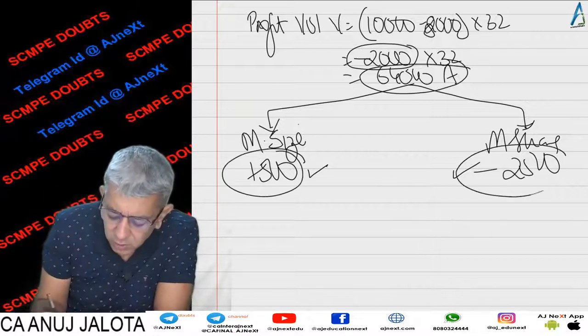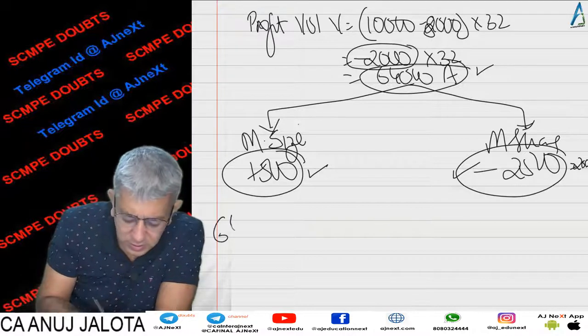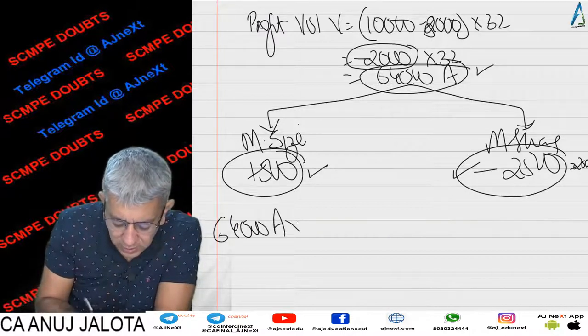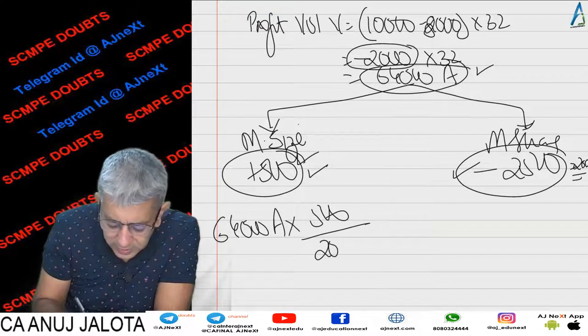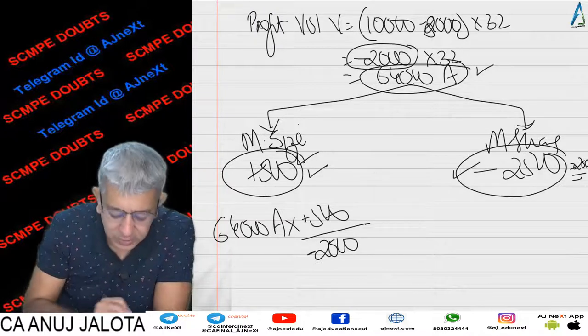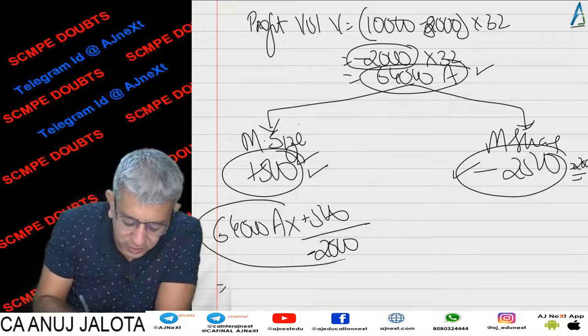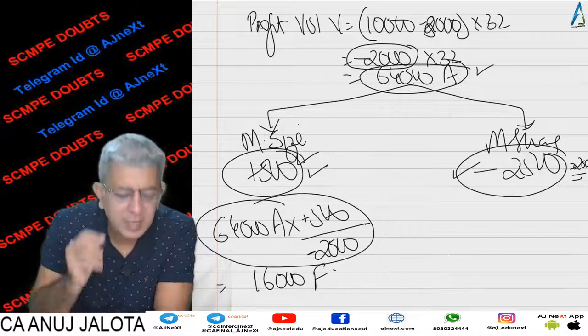you total up this - total of this will be 2,000. So 64,000 adverse into 500 divided by total of 2,000. But this particular figure is minus, this is plus, so therefore things will be changing. It will become 16,000 favorable. In any case, you have sold more number of units, it has to be favorable.